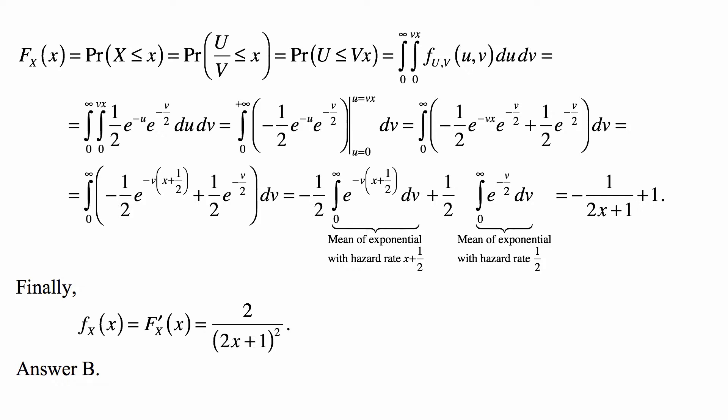In that two-dimensional plane, this is the region where the values of v run from 0 to infinity, but u runs only from 0 to vx. We take the double integral over that region of the joint density.